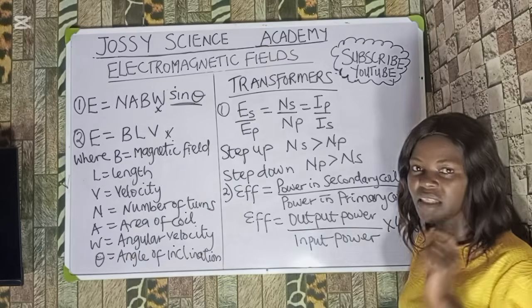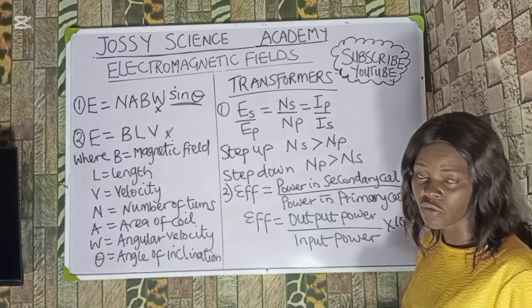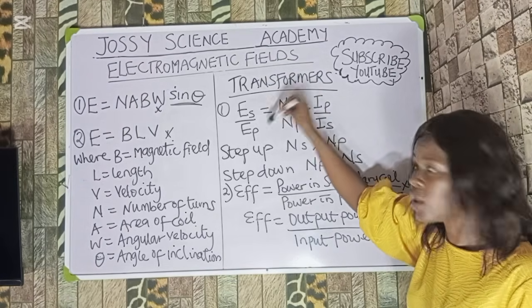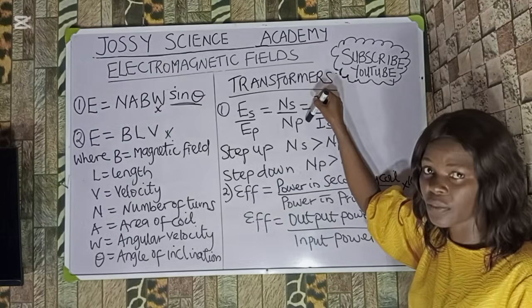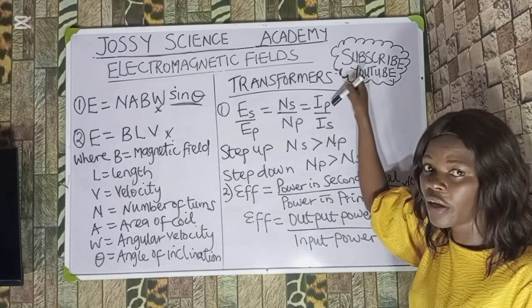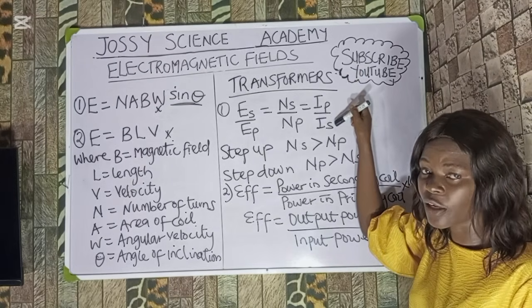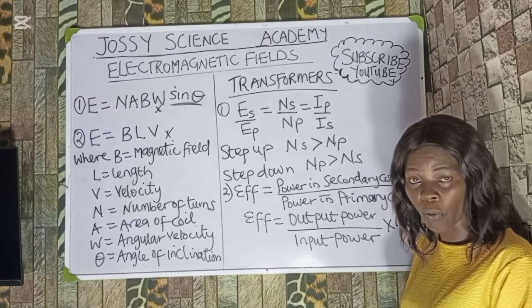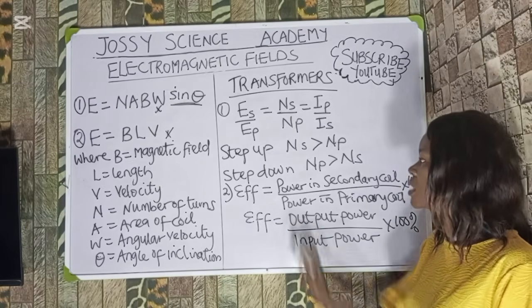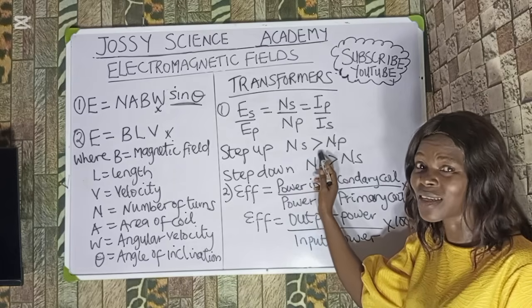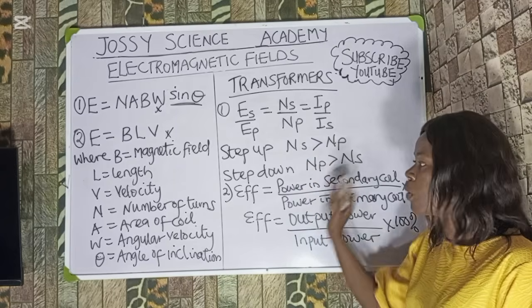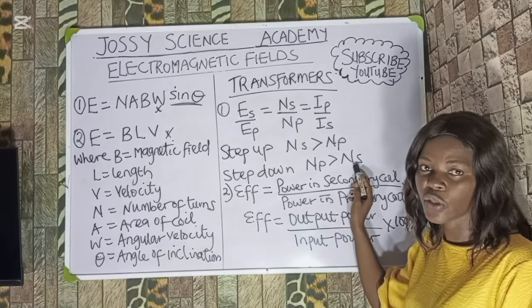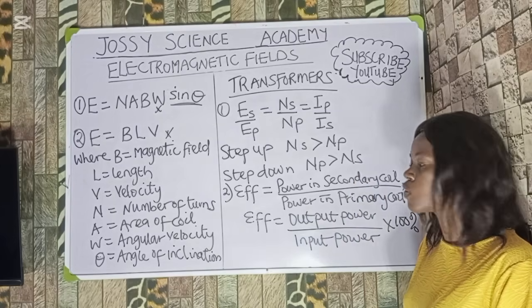For transformers — a topic that comes out every single year — the key formula is: EMF in the secondary coil over EMF in the primary coil equals the number of turns in the secondary over the number of turns in the primary, which also equals the current in the primary over the current in the secondary. In a step-up transformer, the number of turns in the secondary is always greater than in the primary. In a step-down transformer, the number of turns in the primary is greater than in the secondary.